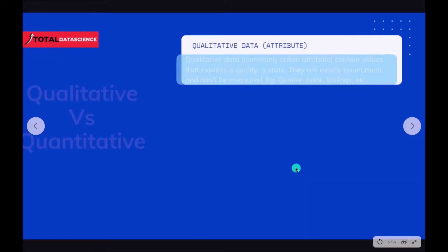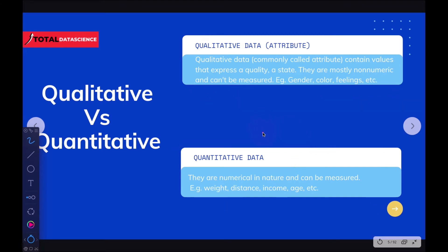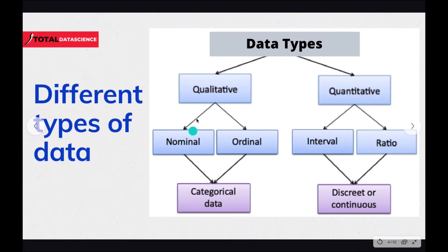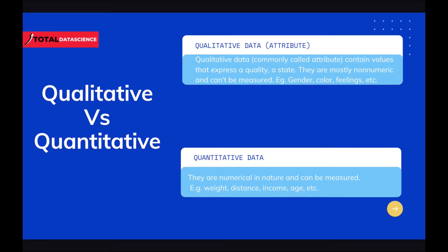Let's take them one by one to understand them. Starting with qualitative — remember that qualitative is about quality, while quantitative is about quantity. If we talk about quality, that's the qualitative — think about attributes or characteristics. Qualitative data is commonly called attributes, and these contain values that express a quality or a state.